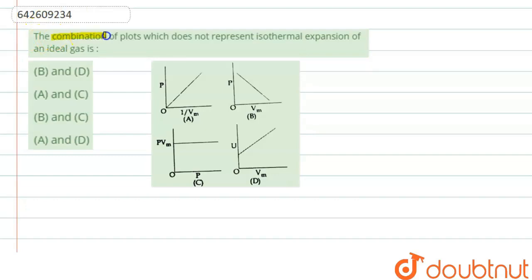The question says that the combination of loads which does not represent isothermal expansion of an ideal gas is.